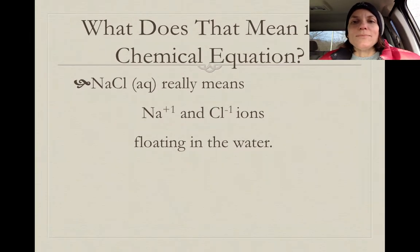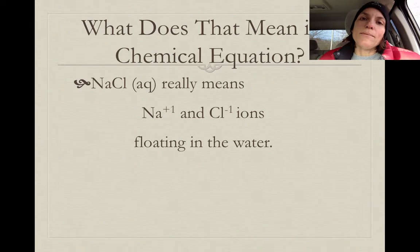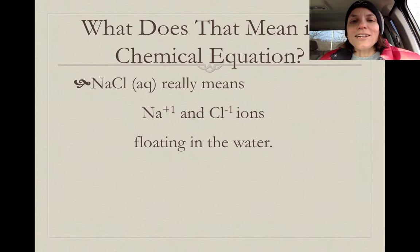All right, so what does that really mean when you write it as a chemical equation? Well, if you were to write a chemical equation, and you wrote NaCl with AQ after it, what that actually means is you have Na+ ions and Cl- ions floating around in the water. So in your mind, you could replace NaCl with the AQ designation with those two ions.